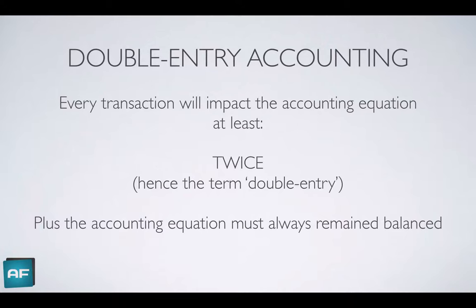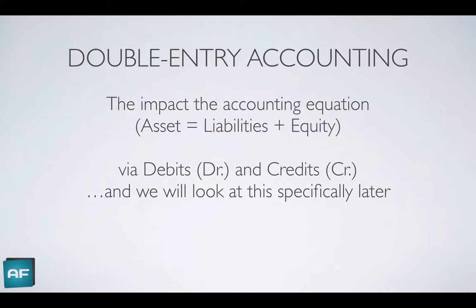The equation must remain balanced — that's lesson number one. You've got to understand that the accounting equation must always balance. Double entry accounting impacts the accounting equation, and it does this via debits and credits. Debits and credits are two impacts on the accounting equation, and we'll look at those specifically a little bit later.